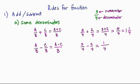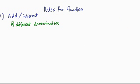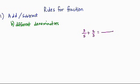Now, what if the denominators are different? When we have different denominators, for example 3 over 5 plus 2 over 3, we need to find a common denominator — the least common denominator. We think of a number that can be divided by both 5 and 3. The least such number is 15.